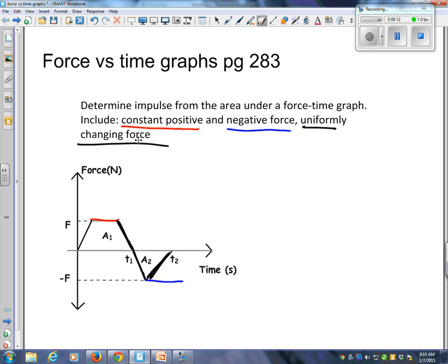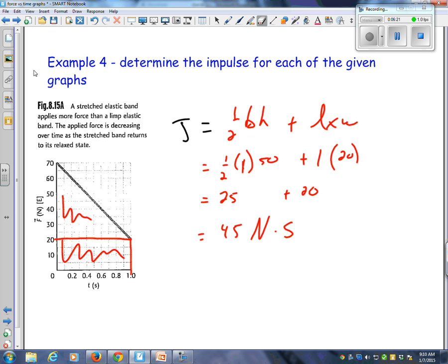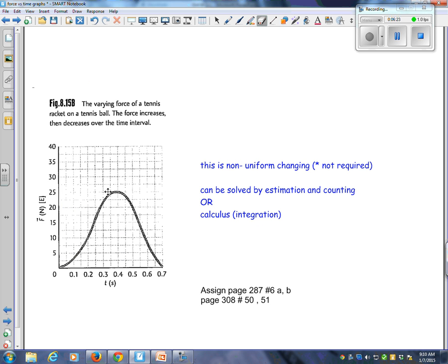Which means that it's changing at a constant rate, which means the line must be straight. Is this a straight line? No, this is non-uniform changing and not required for me to show you. But it is in the book.